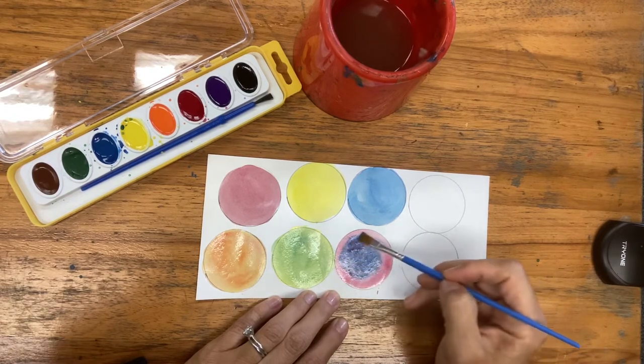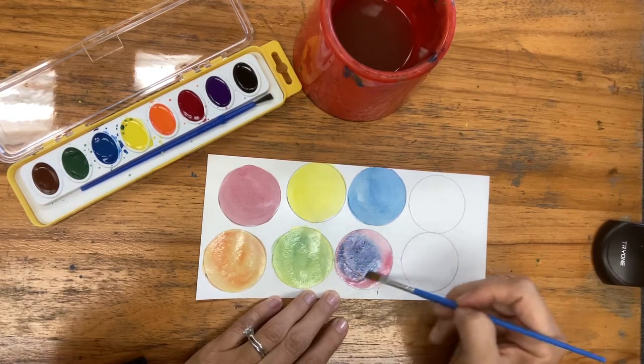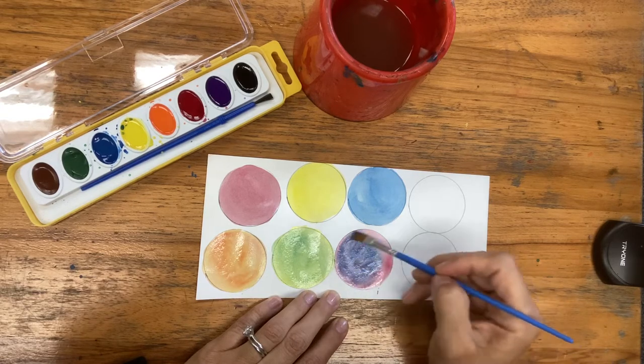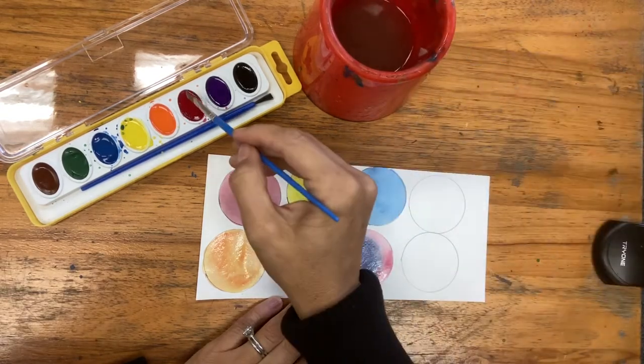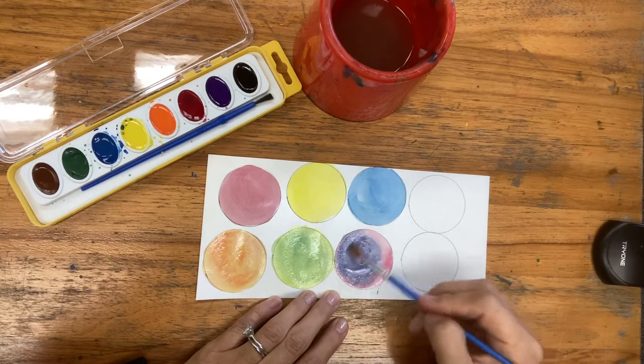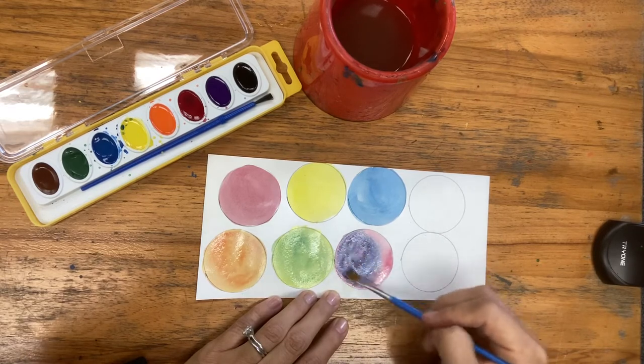If I feel like I'm not seeing that purple as purple as I'd like, I can always go back and add a little bit more red until I get the purple that I want.